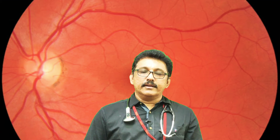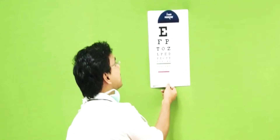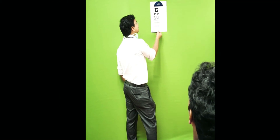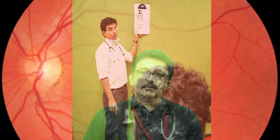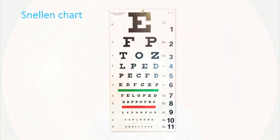The first step in examining the eye is checking visual acuity using the Snellen chart. The chart should be placed six meters away from the patient. The chart has different lines with different letters. If the patient reads all six lines from six meters, you record it as 6/6. If not, you record accordingly. This chart is called the Snellen chart and is used for testing visual acuity.